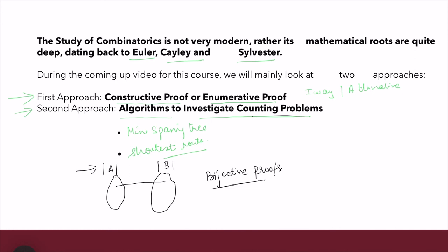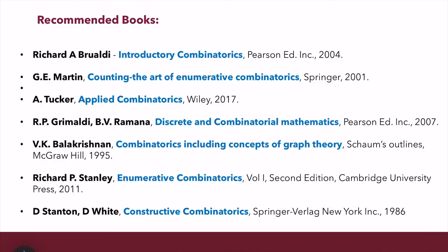There are no prerequisites for this course. The only way to learn enumerative combinatorics is, first, to love the counting problems, and second, to have good mathematical maturity, which usually comes by practicing problems in combinatorics.